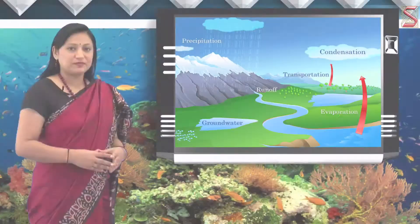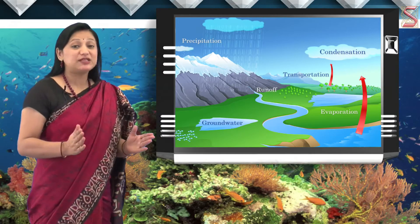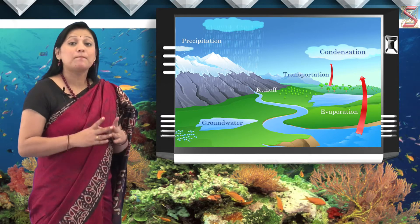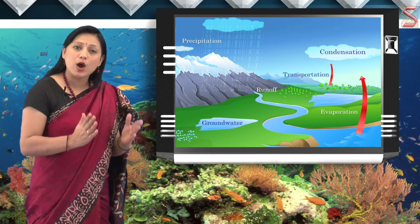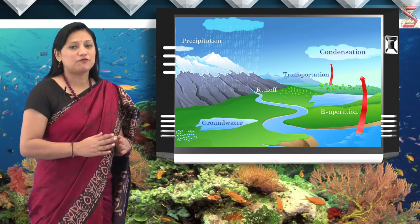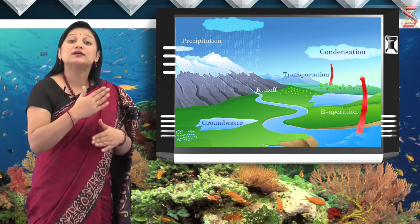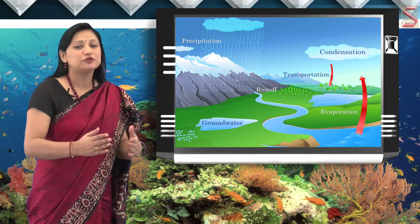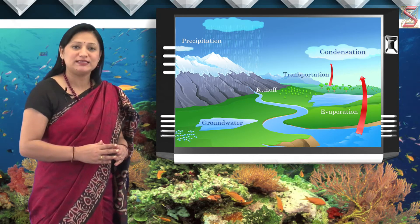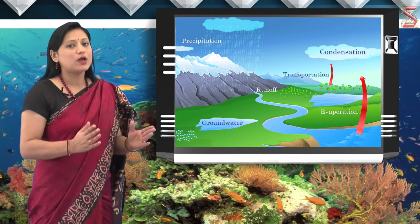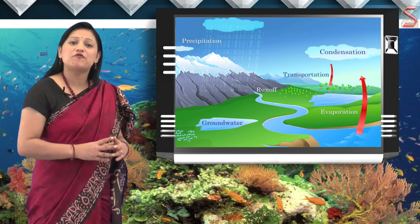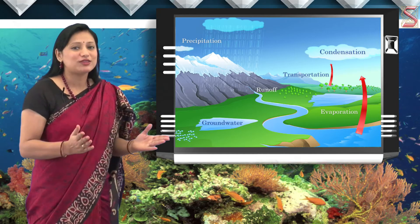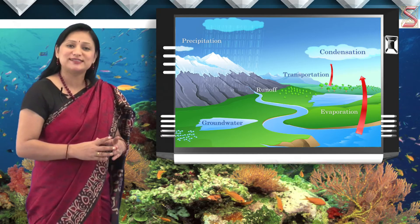It might be surprising, but it is a fact that less than 1% of the water that the earth receives is useful to human beings. Now, let us look in detail about the cycle of water, or the hydrological cycle.